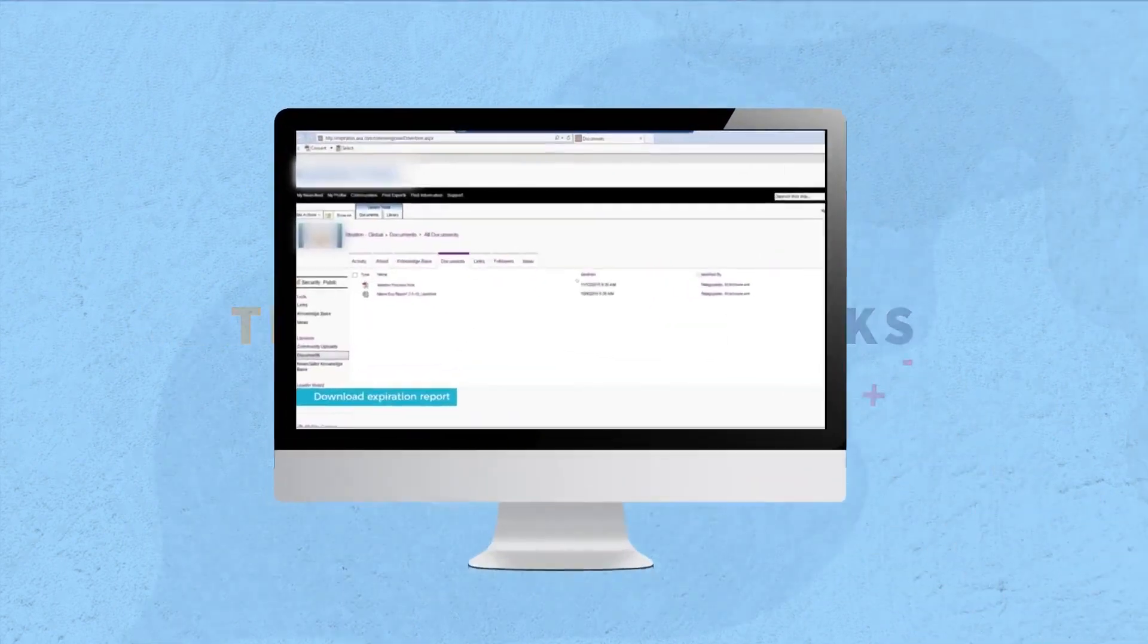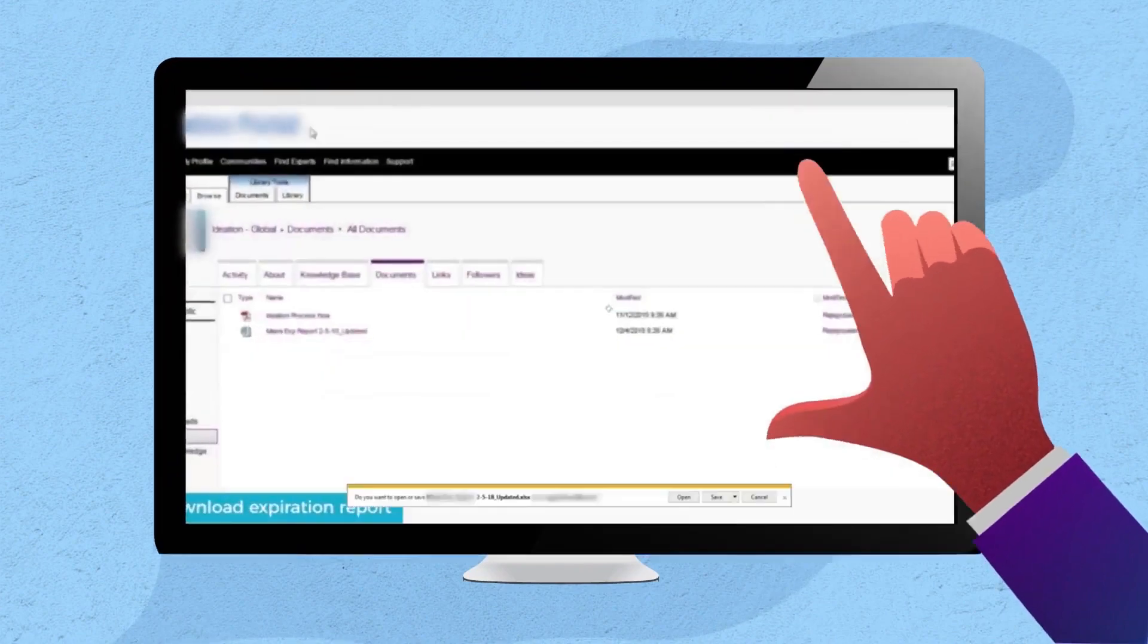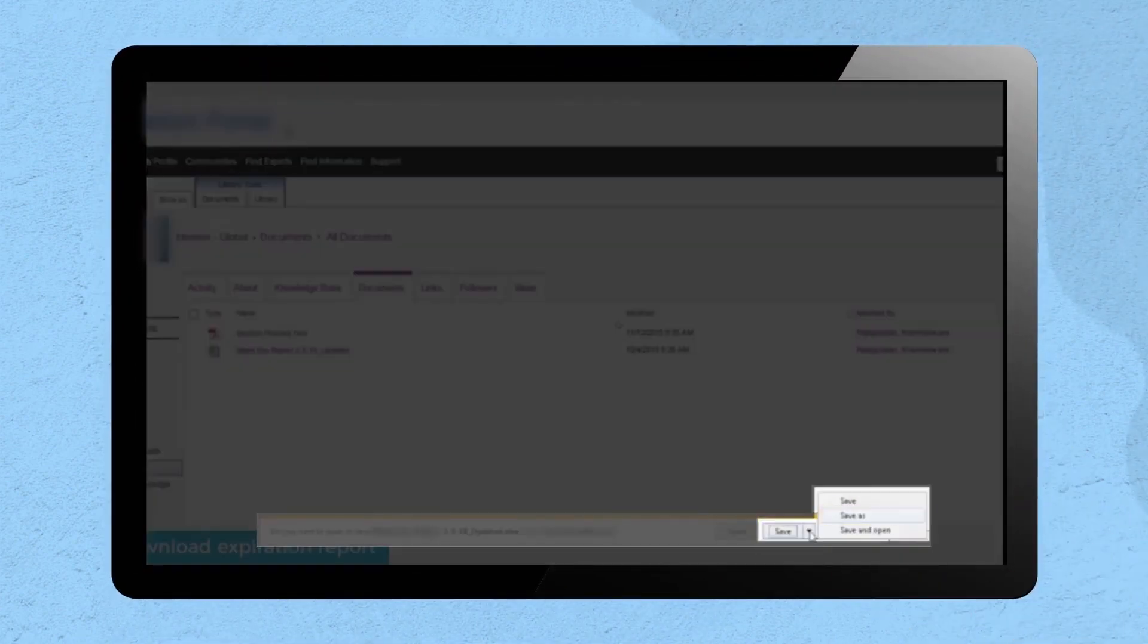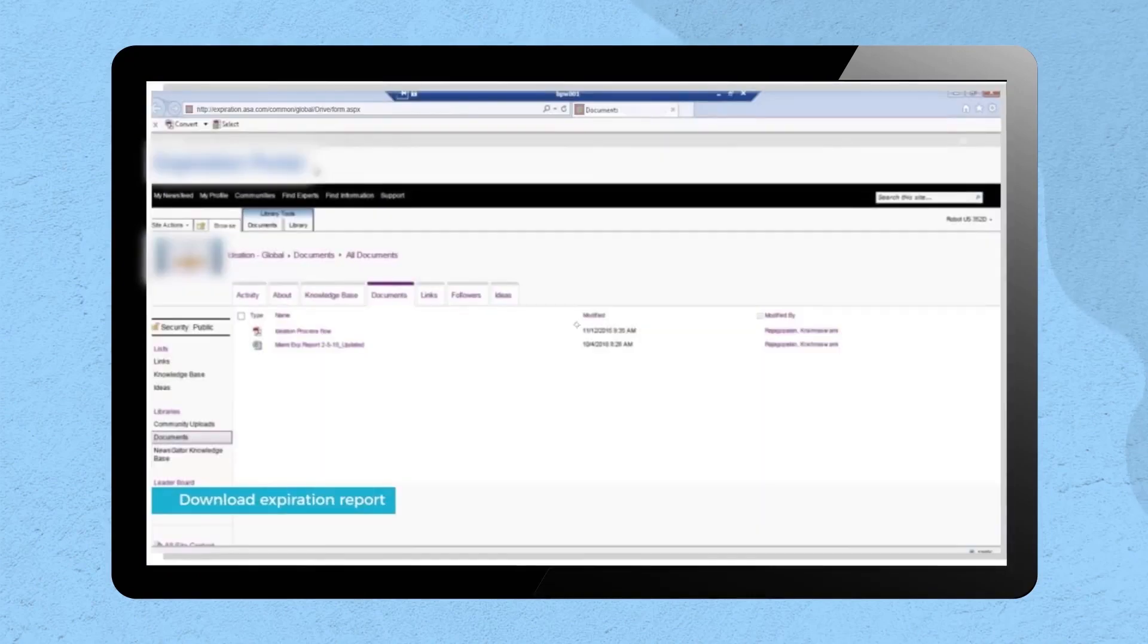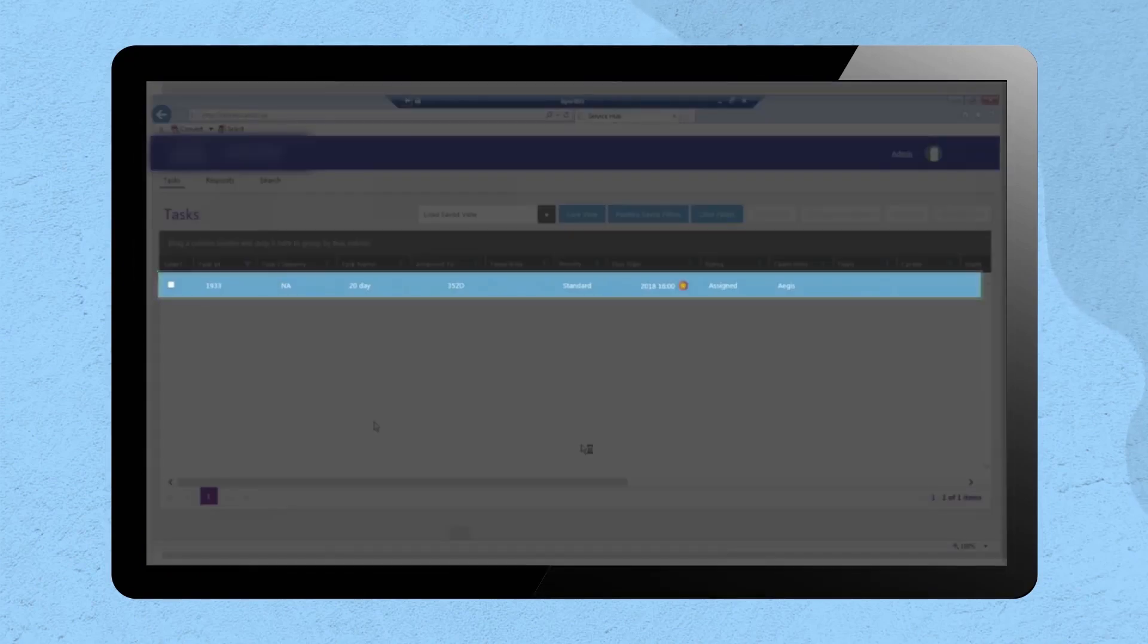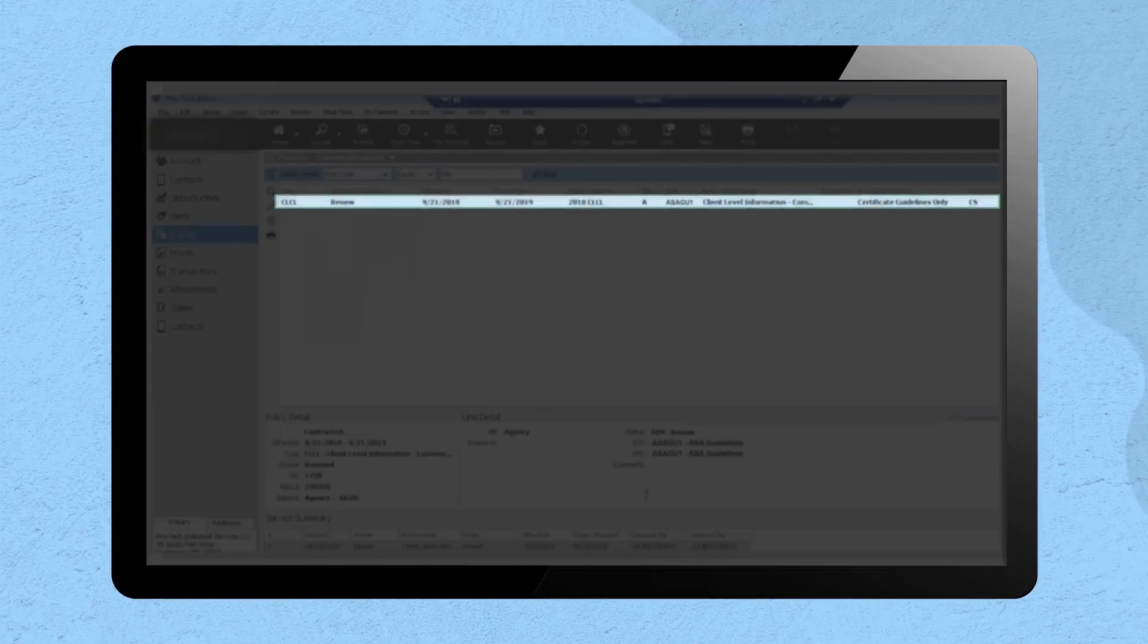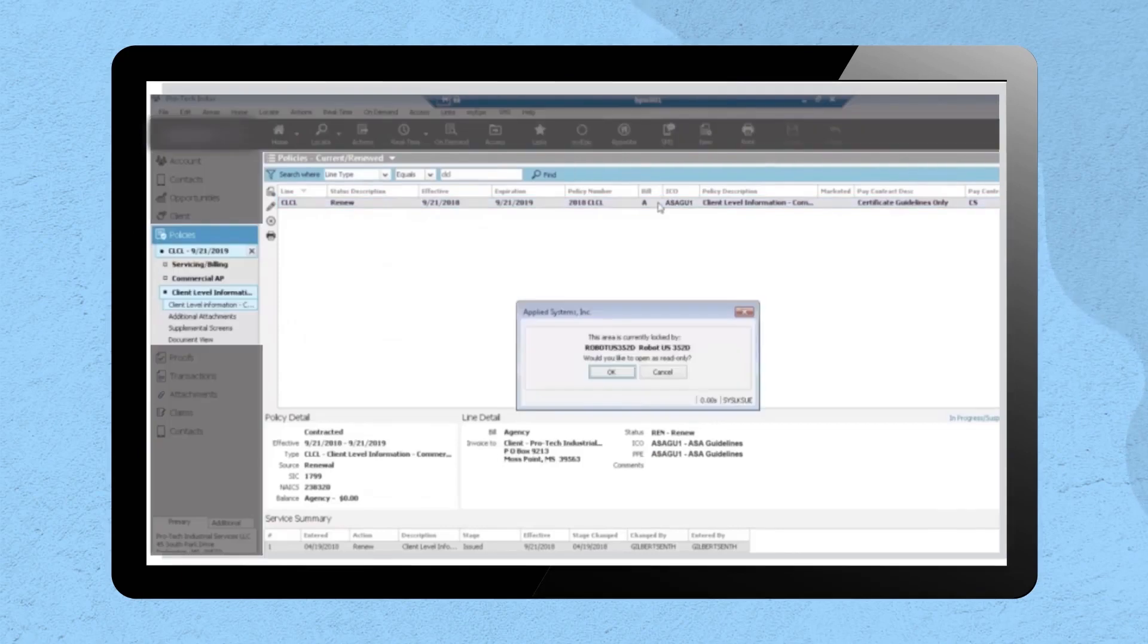This is how it works. All unissued cases are identified from the expiration report and assigned to the bot. A task is created and assigned for each policy. A task status check is done every two days until an update is received or the task is aged six days.